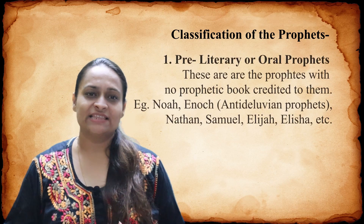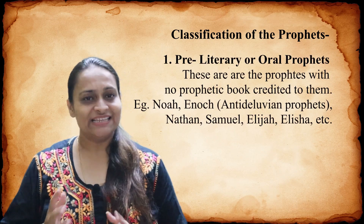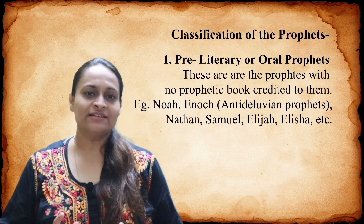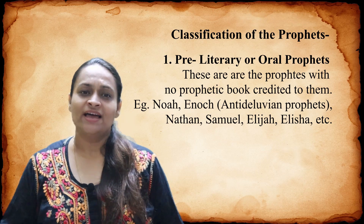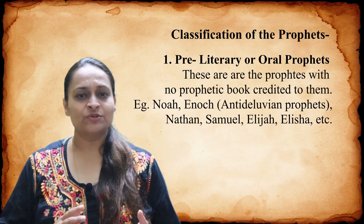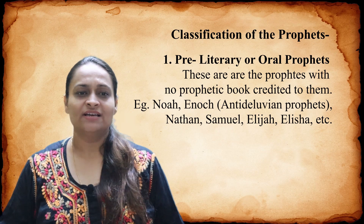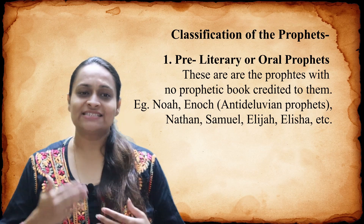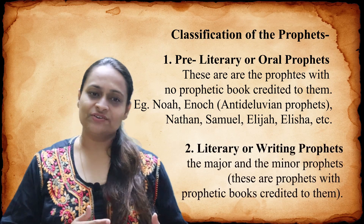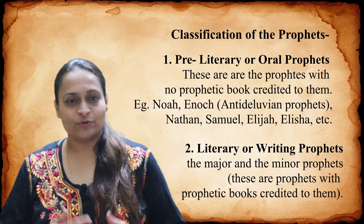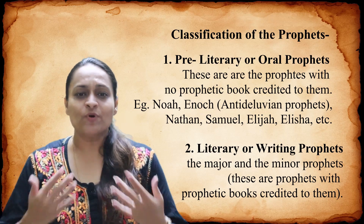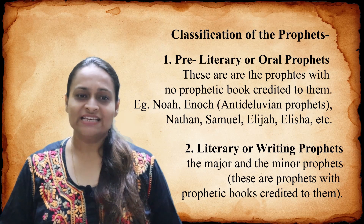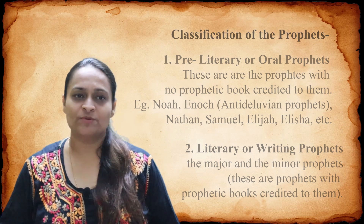We have two parts in this. The first is the pre-literary or oral prophets — prophets with no prophetic book credited to them. Examples include Noah and Enoch, who belong to the antediluvian period, and Nathan, Samuel, Elijah, Elisha, etc. The second category is the literary or writing prophets — those who have books credited to or written by them. These are the major and the minor prophets.